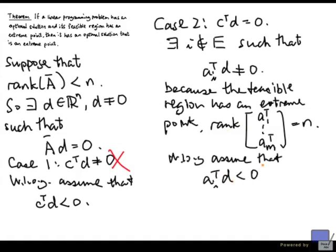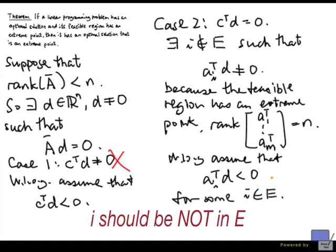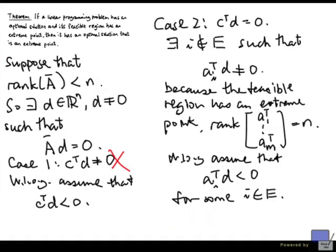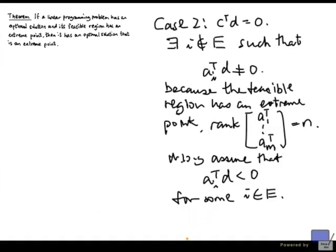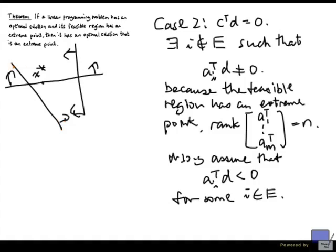And like before, we are going to assume that a_i transpose d is less than 0 for some i not in E. Now, we are going to move away from x-star and construct a new point that contradicts our assumption of x-star. And before we do that, let's see what this is saying. I have my optimal solution x-star. It has a number of inequalities that it satisfies with equality. For example, it might satisfy something like this. But now, there are other inequalities that it does not satisfy with equality.